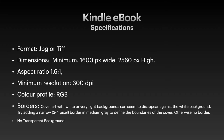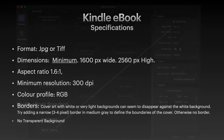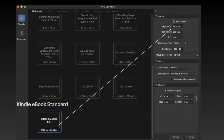Cover art with white or very light backgrounds can seem to disappear against the white background. Try adding a narrow 3 or 4 pixel wide border in medium grey to define the boundaries of the cover; otherwise, no border. Do not use transparent backgrounds — most distributors will reject your image if it has a transparent background or transparent layers. These are the presets I've generated; they'll be mentioned in the description on the YouTube channel and available from my website's download area.